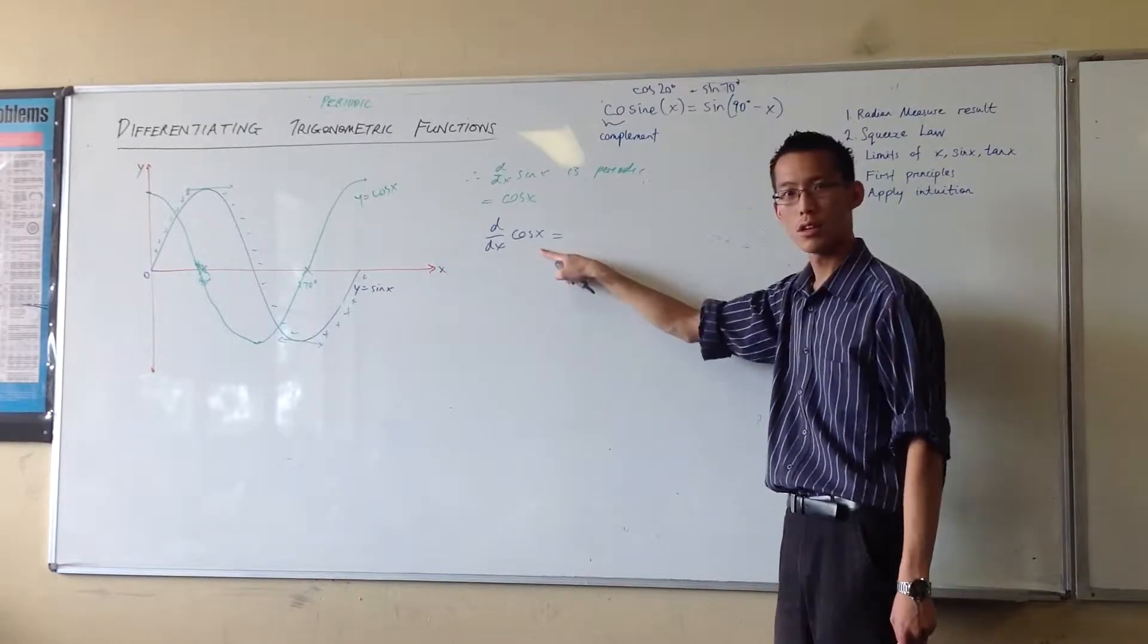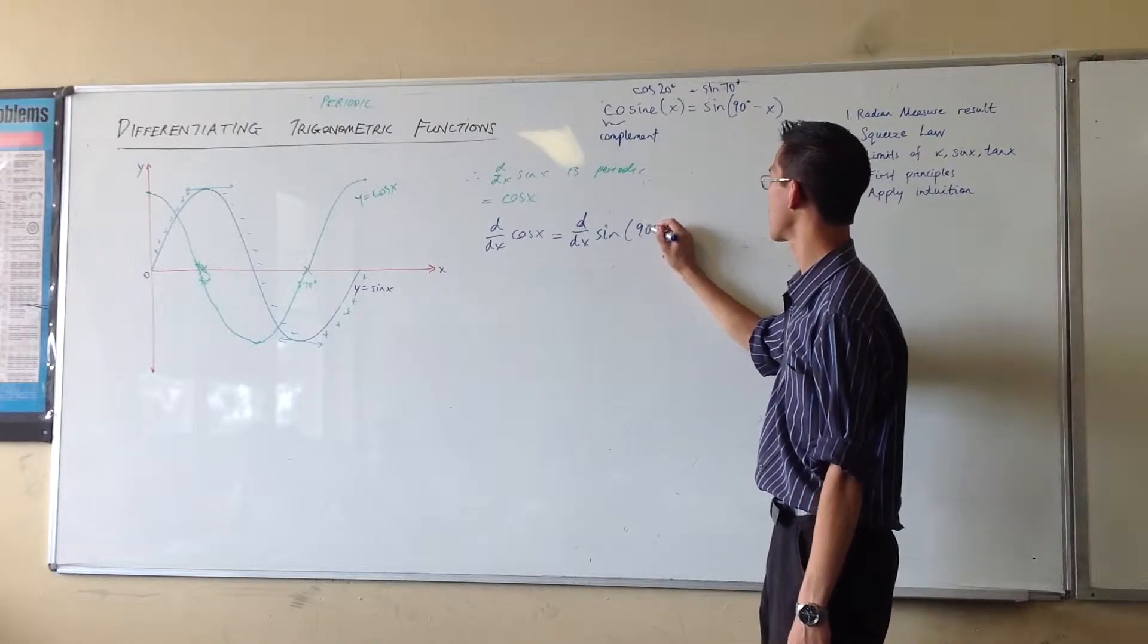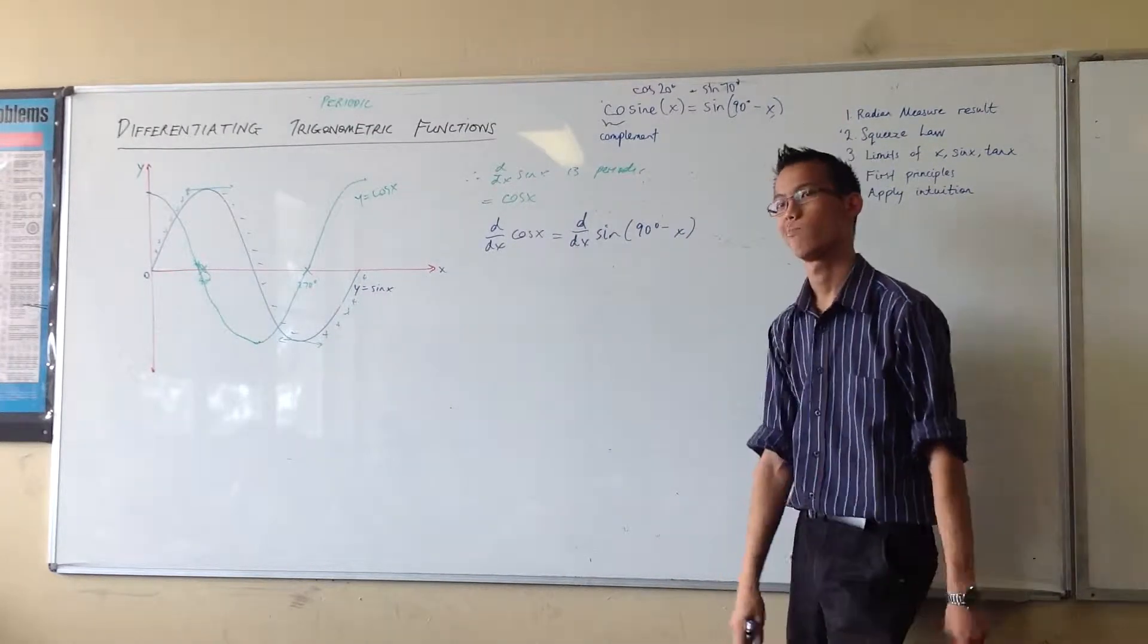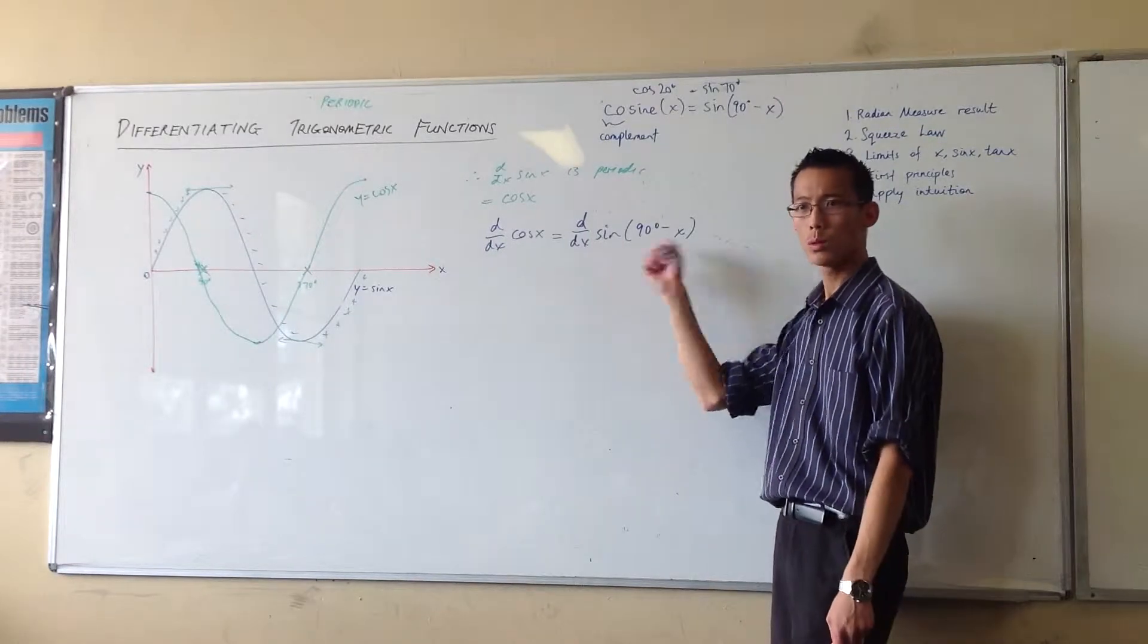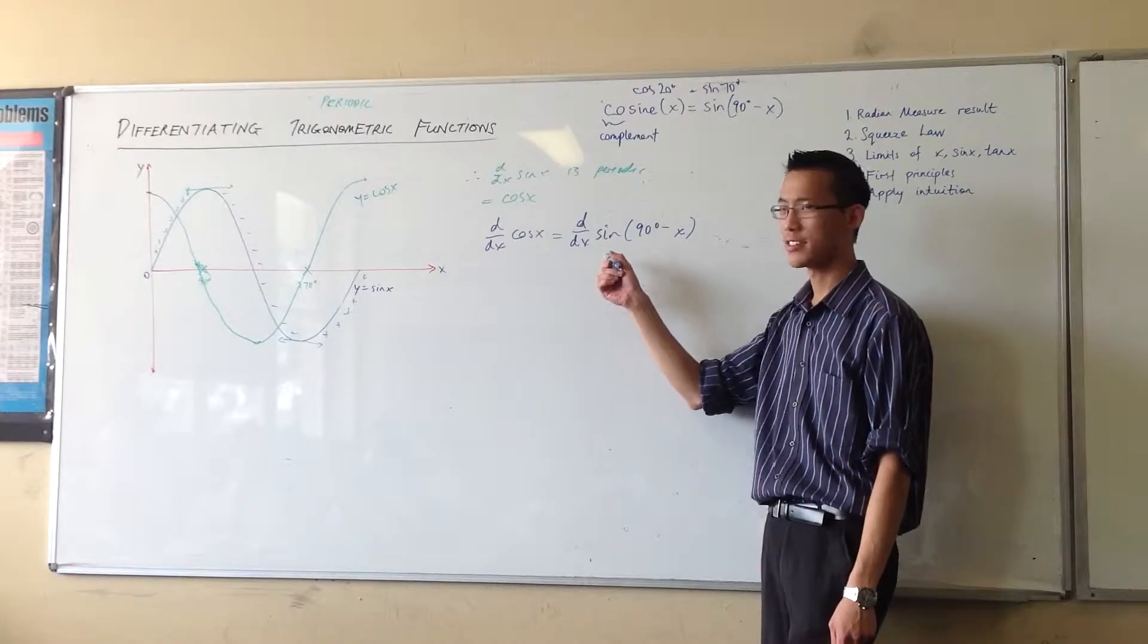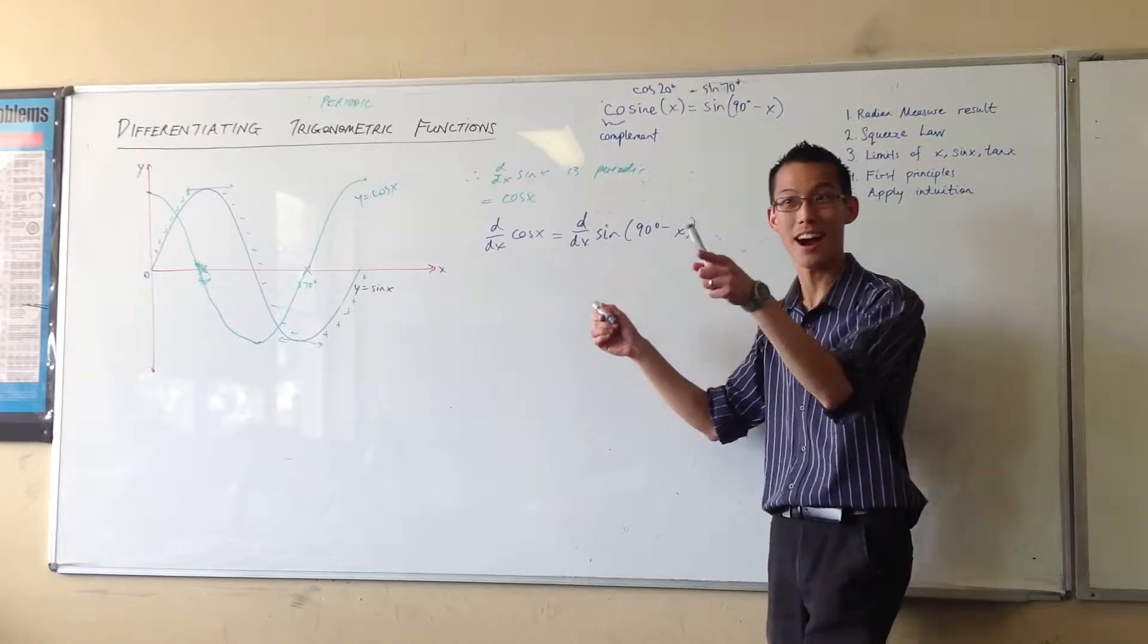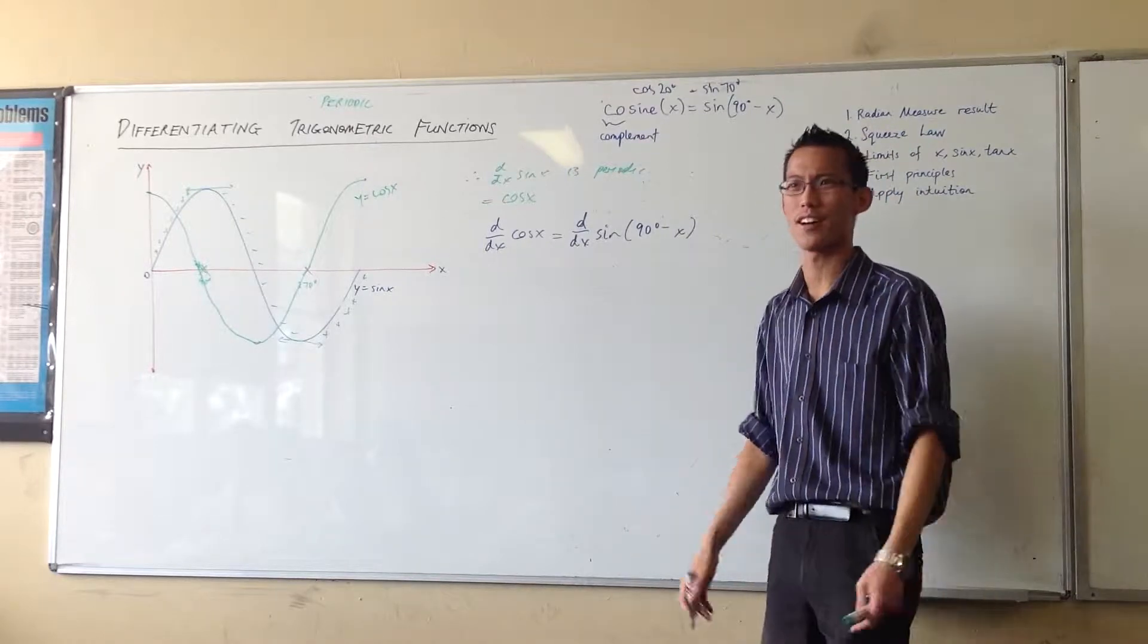So therefore, what can I put in here? This is the derivative of sine 90 degrees minus x. What rule do we need to differentiate this? This is a function. You could use first principles - we are going to in a second - but you guys know a faster way.